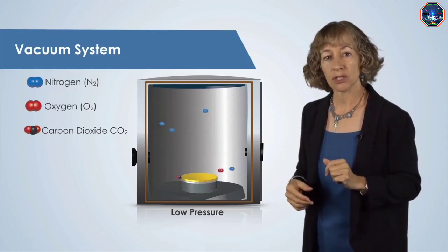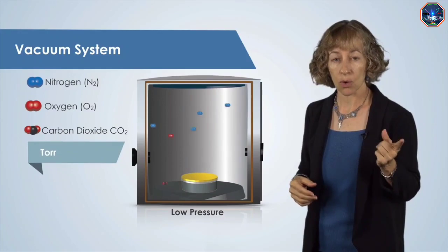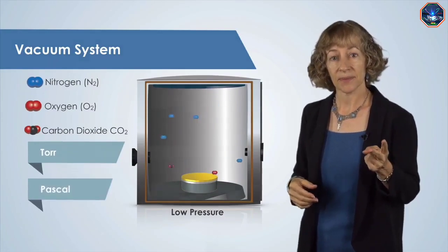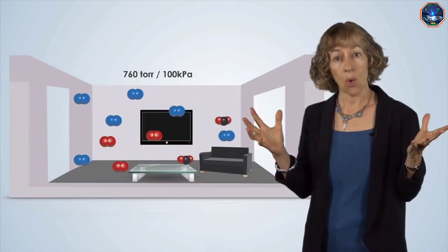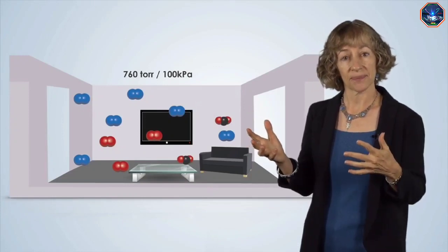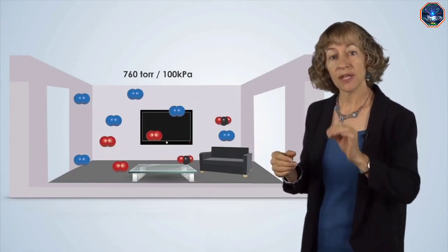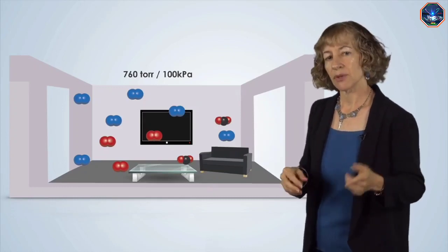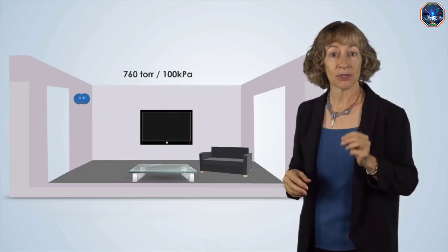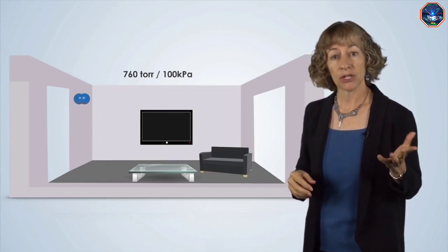Two common units of pressure used in laboratories are torr and kilopascal. A normal room has a pressure of 760 torr or 100 kilopascal. As we remove the air from the chamber, the pressure will drop accordingly. For example, if we remove 99% of the air from a chamber, the pressure would be about 7.6 torr.